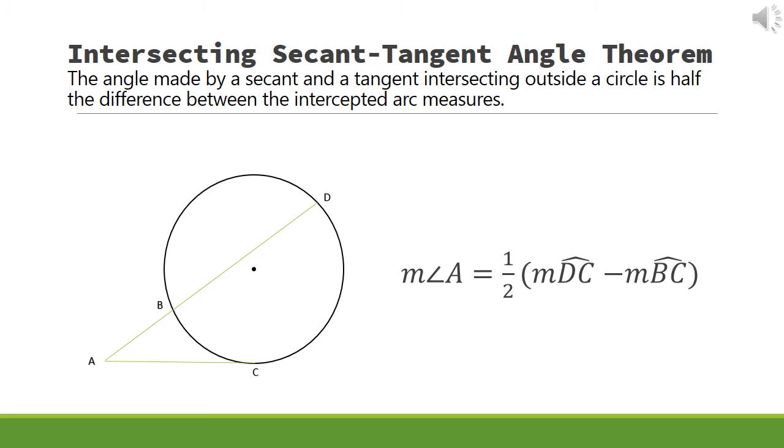Thus, one-half the difference of the measures of arc DC and arc BC is equal to the measure of angle A.